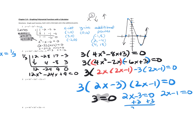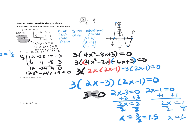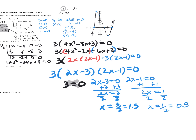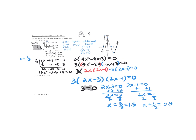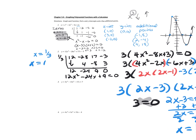For the factor 2x minus one: add one, 2x equals one, and x equals one half. If you had used the trace feature on your calculator, you would have seen the decimal equivalent to one half is 0.5, and the decimal equivalent to three halves is 1.5. So my three zeros are one third (used in synthetic division), 1.5 or three over two, and 0.5 or one half.